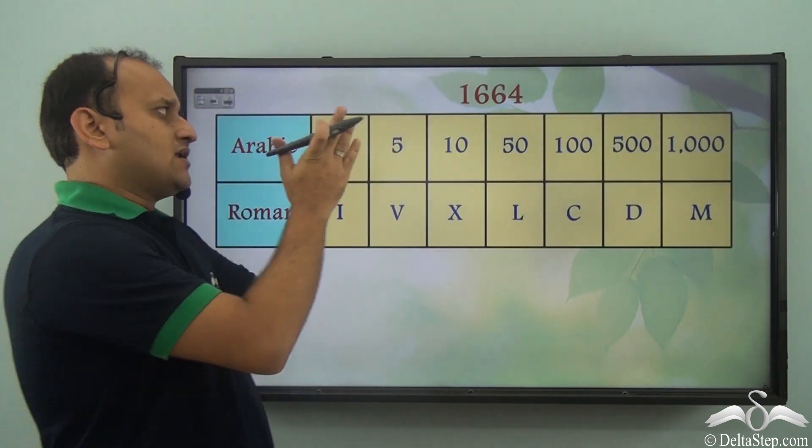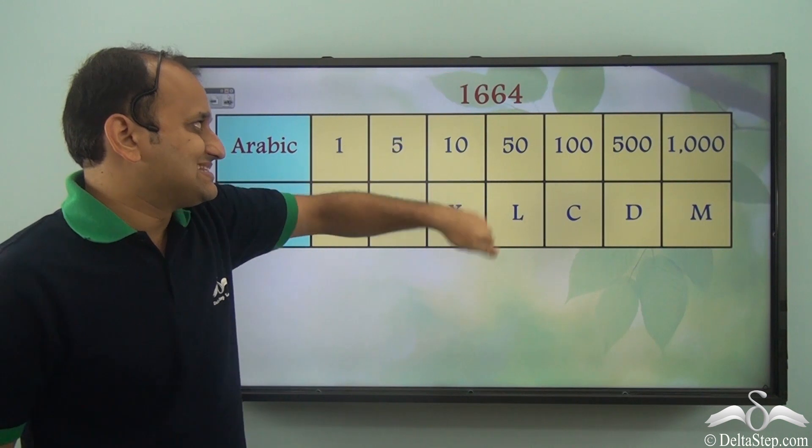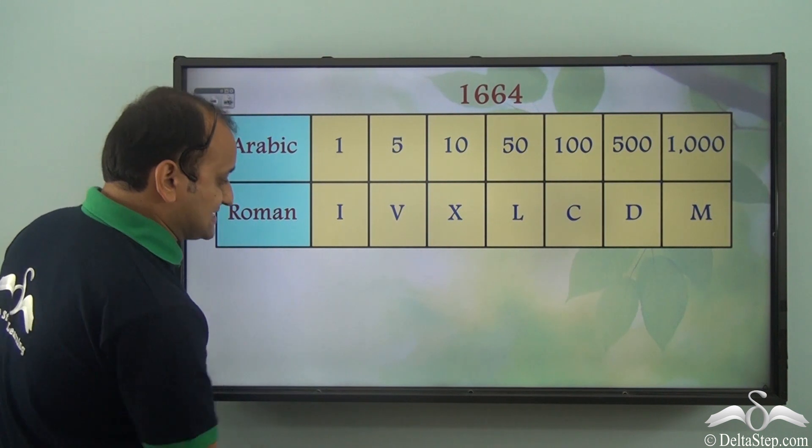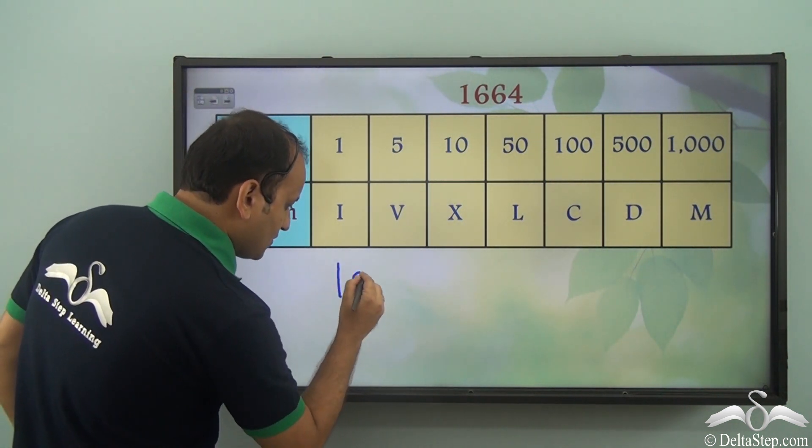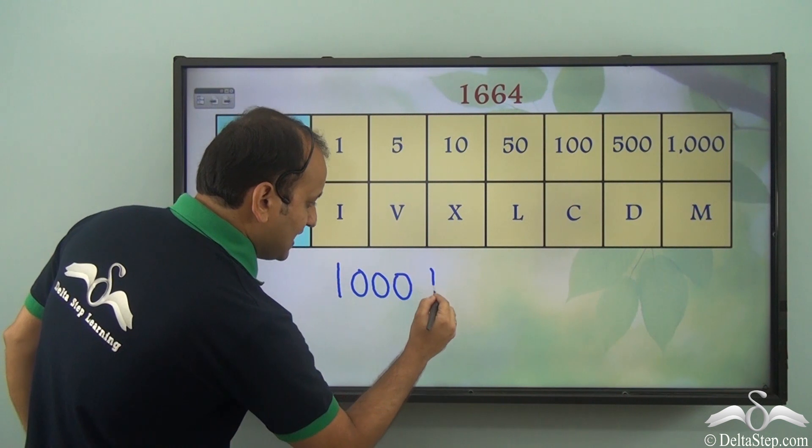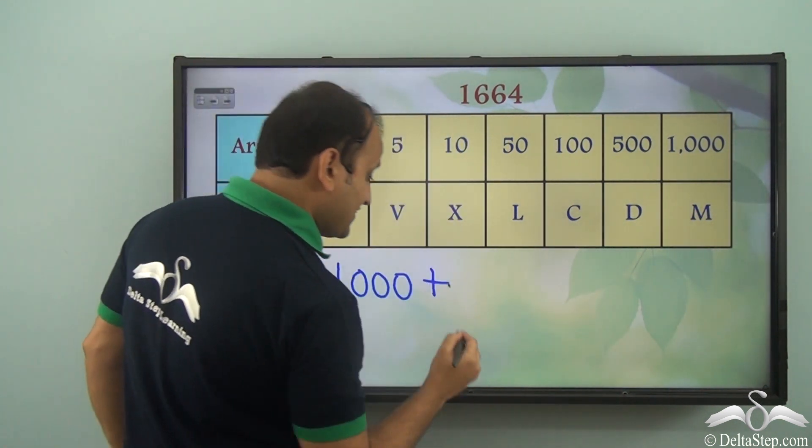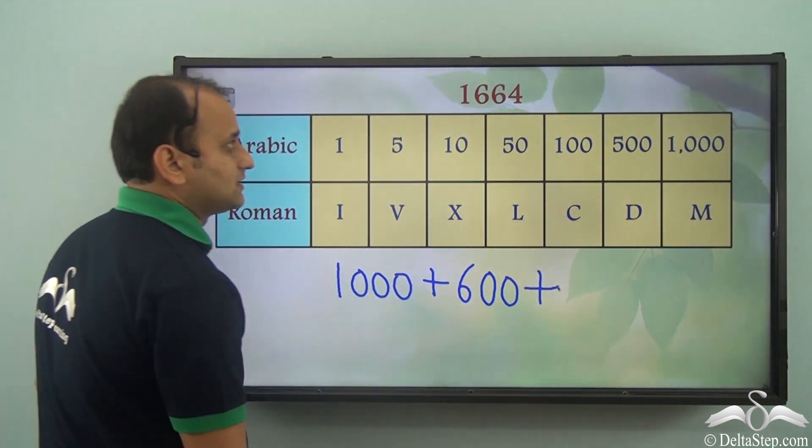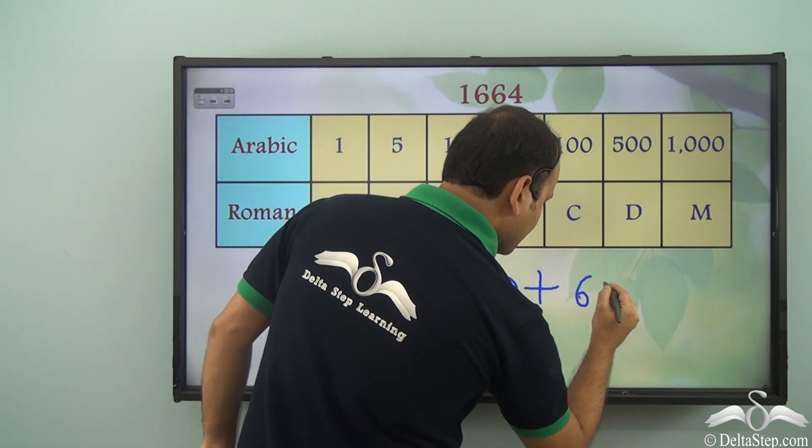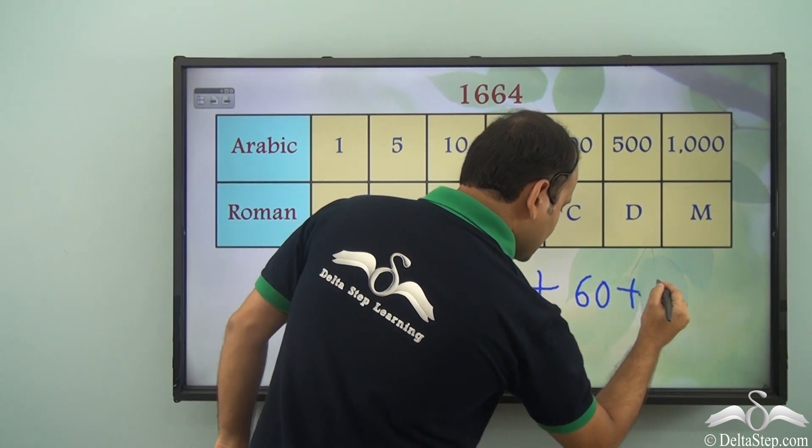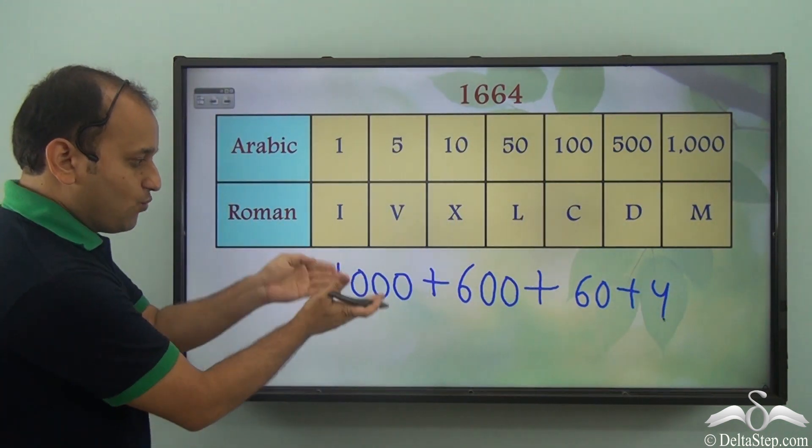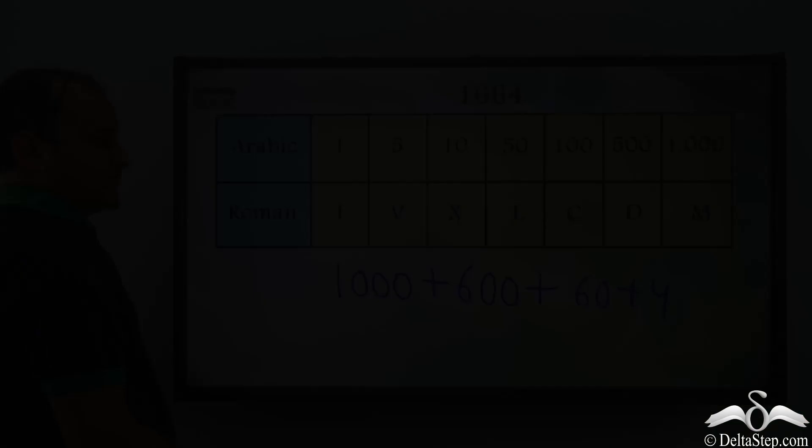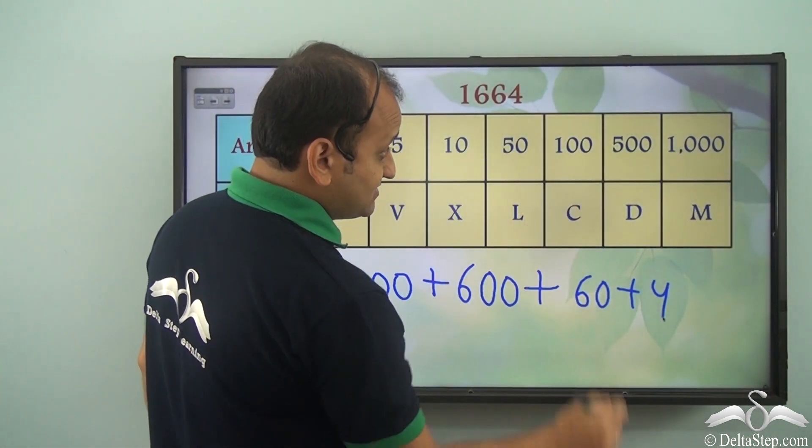Now let's try another number. It is 1664. So again, if we break this, we can write it as 1000 plus 600 plus 60 plus 4. So we have 1664. Now can we break it further according to the available symbols?